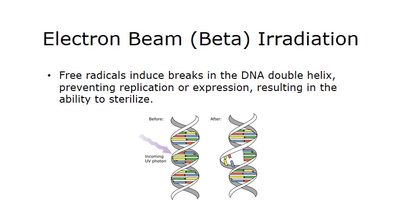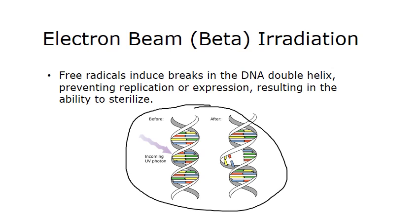Electron beam radiation is very efficient, but for polymer-based medical devices it is not always desirable because the electrons can damage the polymers. Free radicals work by inducing breaks in the DNA double helix. Here's a schematic showing DNA before and after electron exposure. Once a break is introduced into the DNA double helix of a living organism, that organism is no longer able to replicate or reproduce, and therefore it dies — leaving no living matter on the medical device.